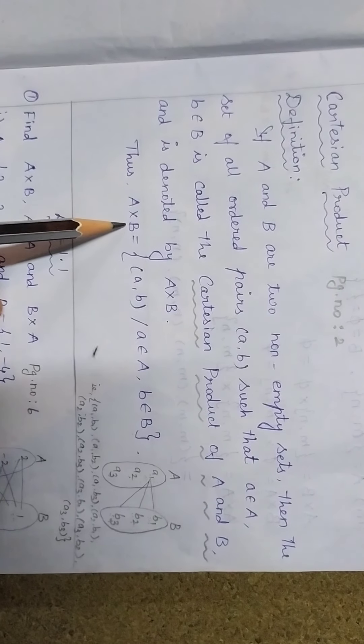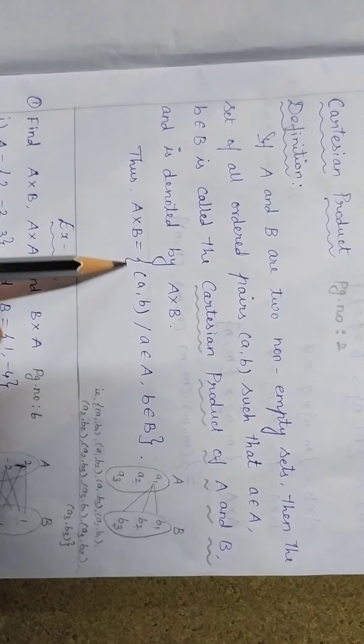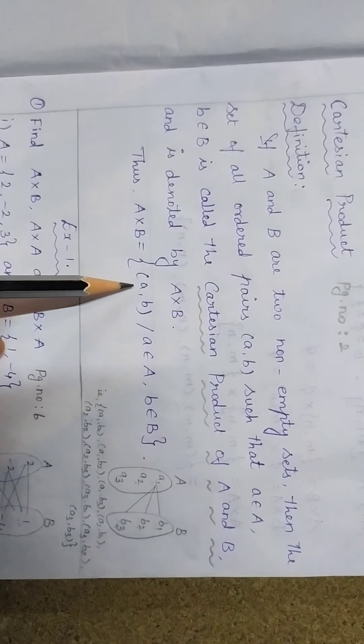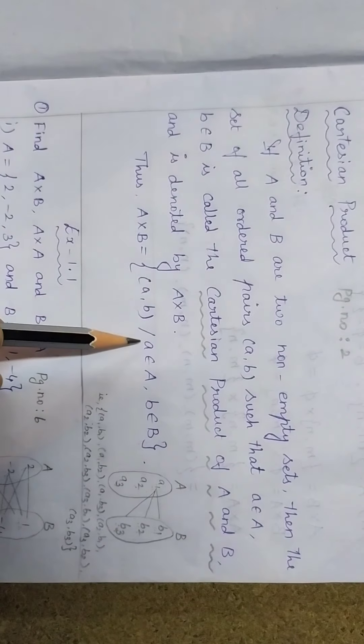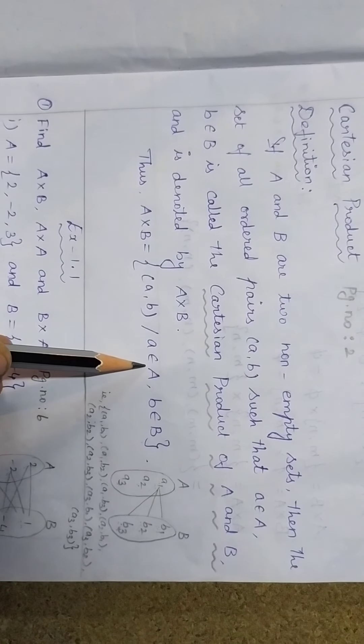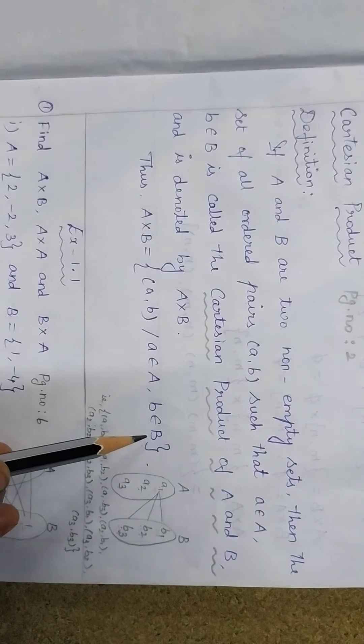Thus, A cross B is equal to the set of all ordered pairs (a, b) where a belongs to A and b belongs to B.